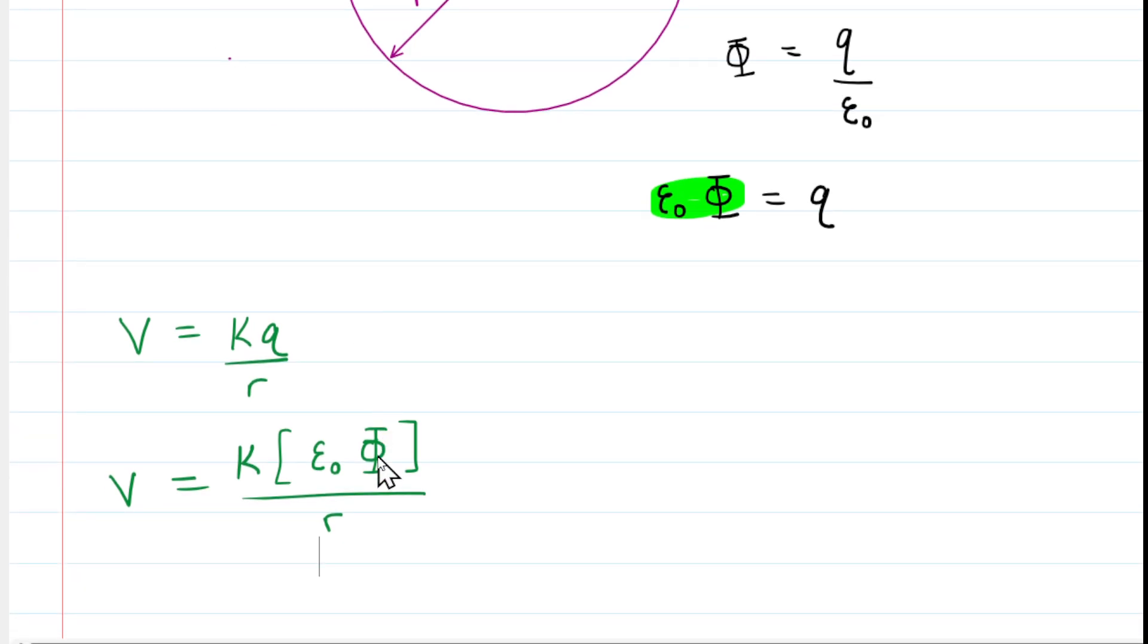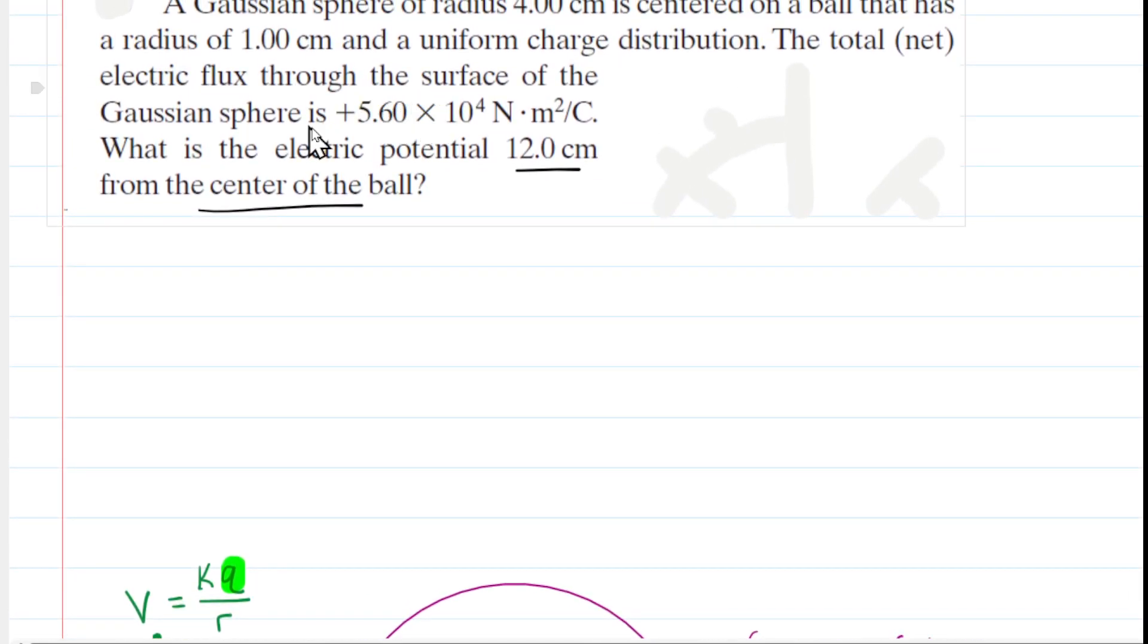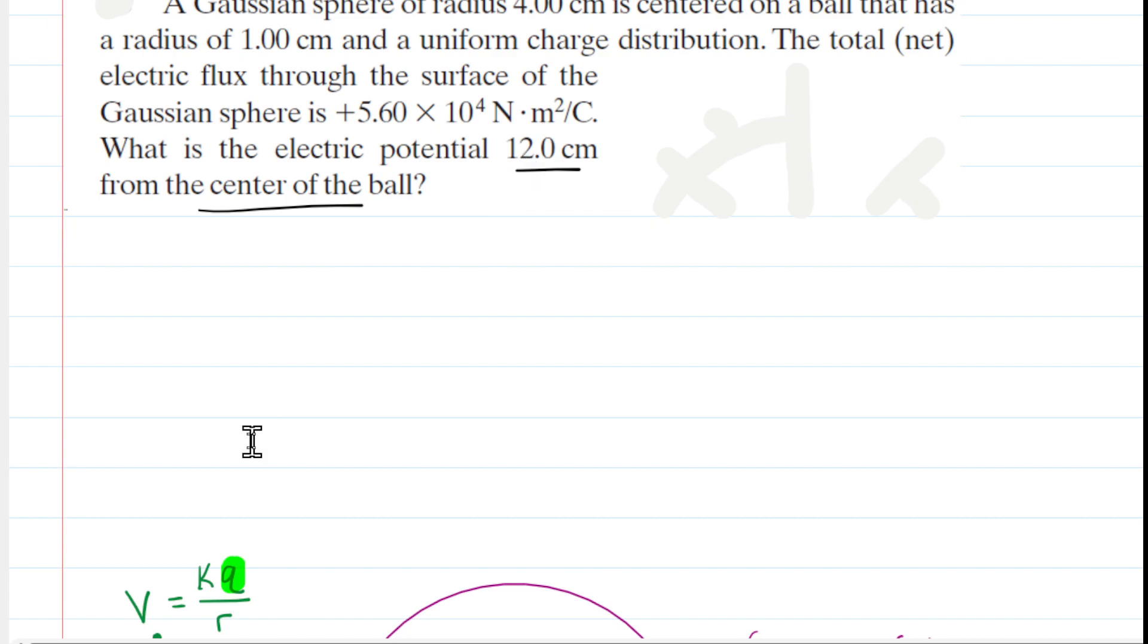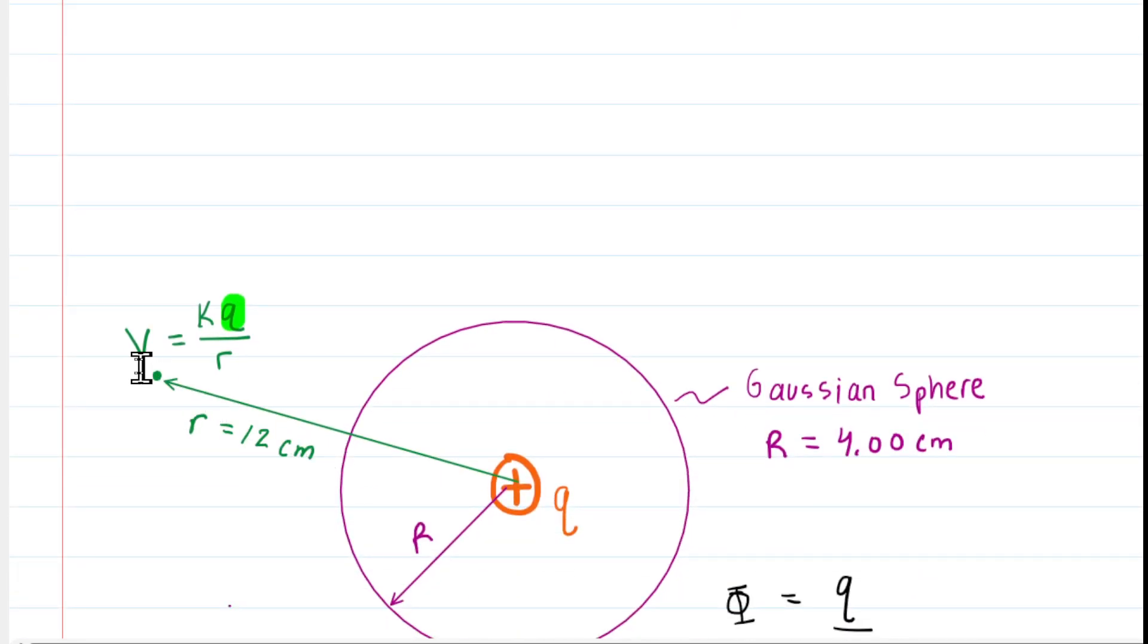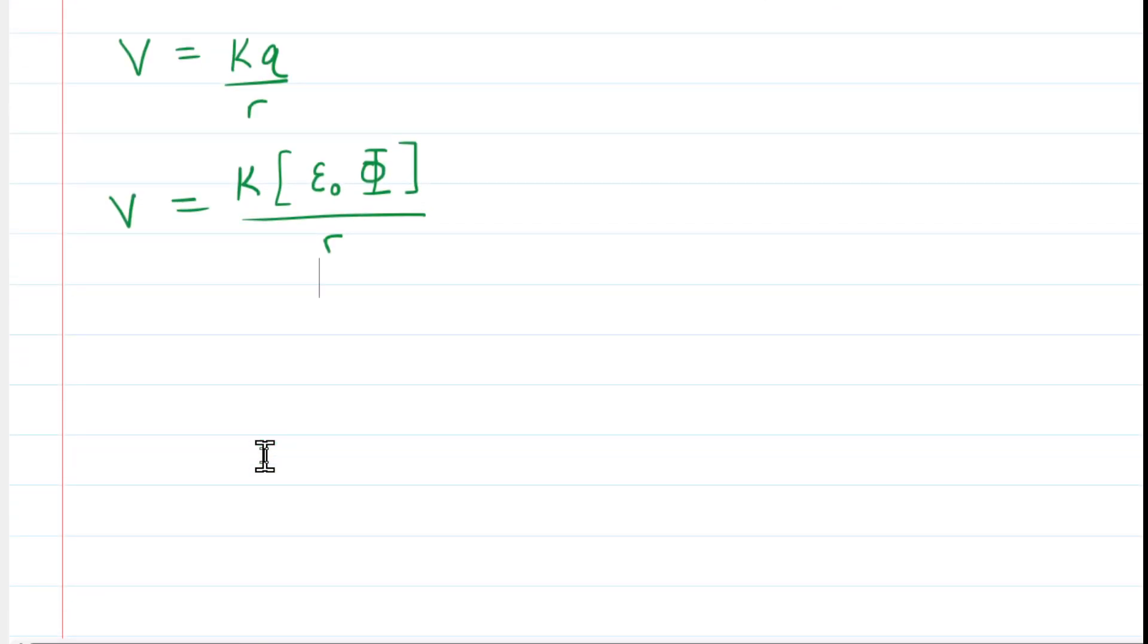All we need to do is go back and get the value of the electric flux, which is given in this quantity right here. And then again, we have the distance to the point in question, which was 12 centimeters. Just make sure you divide that by 100 to get it into meters. So let's go ahead and plug in the known values.